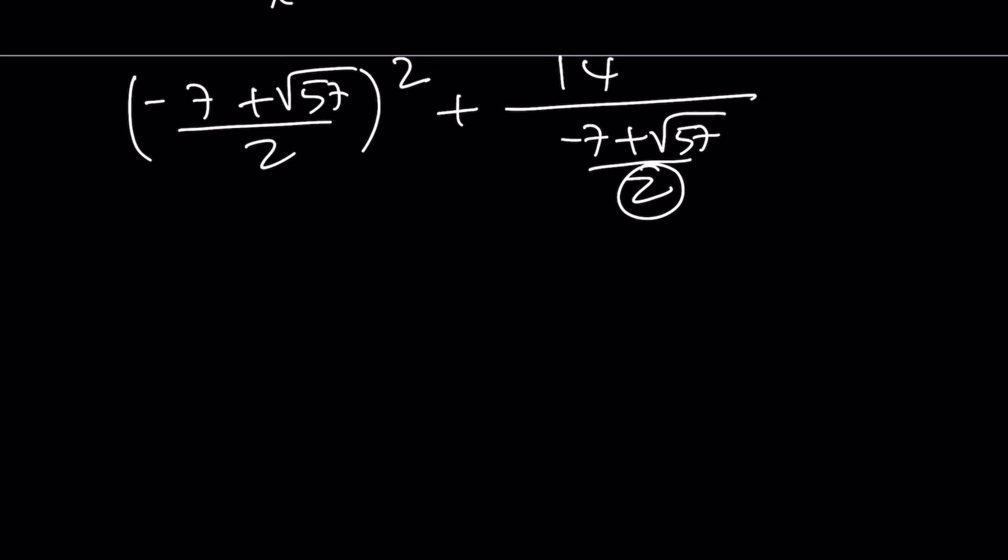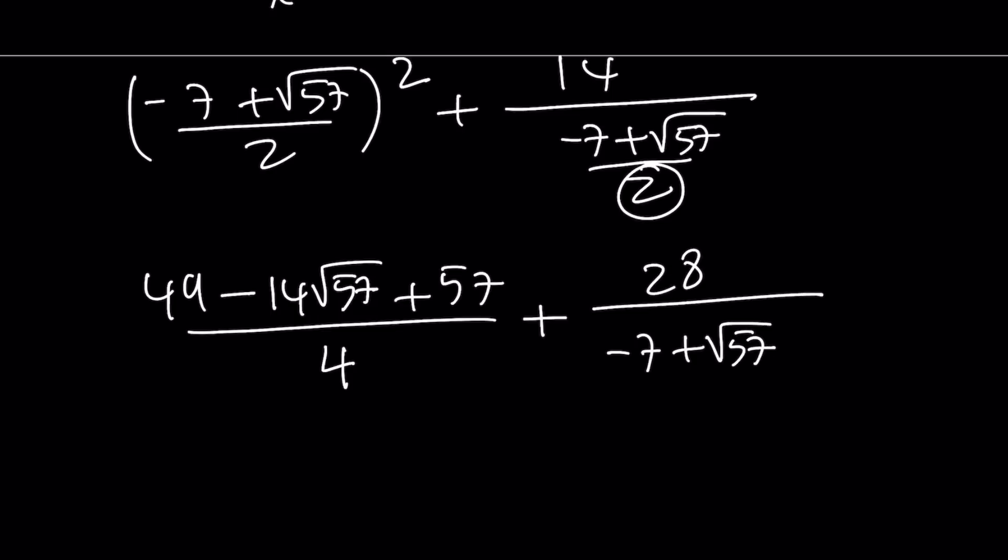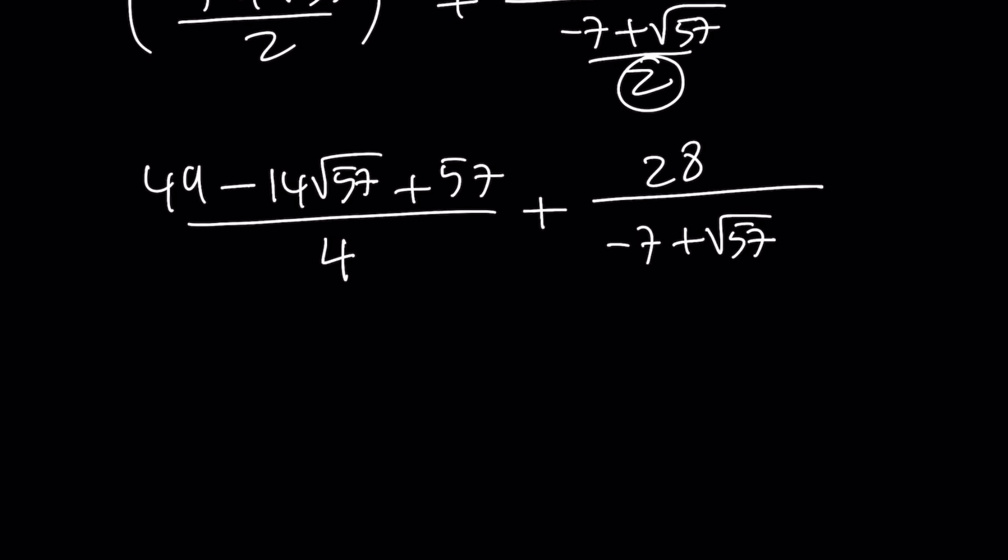Since it's kind of like a plus b quantity squared, so we can write it as a squared minus 2ab, which is going to be 14 root of 57, plus square root of 57 squared, which is 57, and that is going to be divided by 4. And here we're going to get 28 divided by negative 7 plus root of 57. Now, I would like to rationalize the denominator for the second fraction, and obviously I want to simplify the first one.